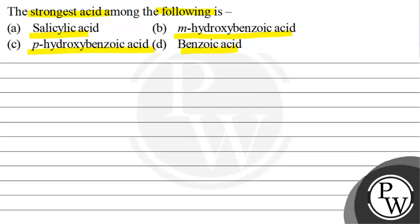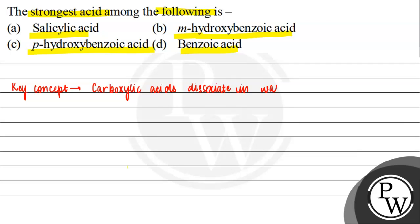Now let us talk about this question. The key concept here is the acidity of carboxylic acids and their derivatives. Carboxylic acids dissociate in water to form carboxylate ions and hydronium ions.